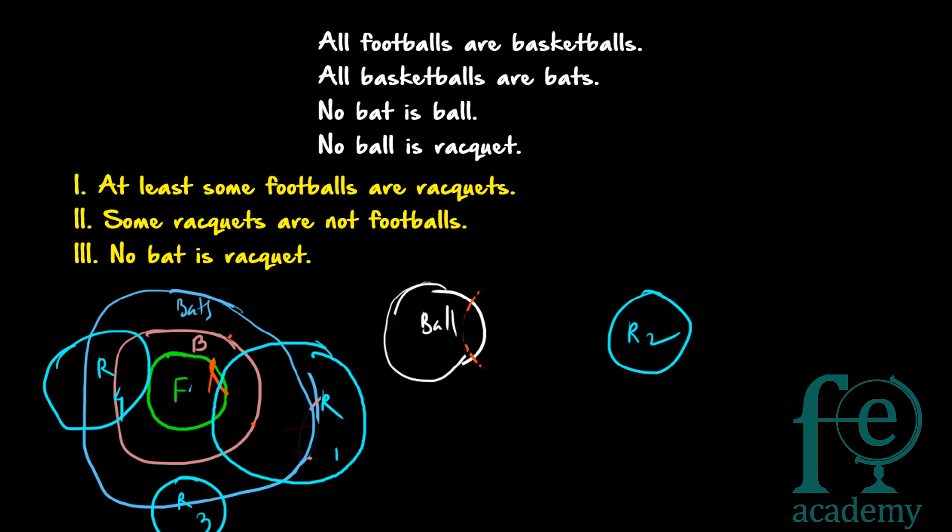First conclusion: at least some footballs are racket. We cannot tell, because there is one possibility that racket falls totally outside all three circles — bats, basketballs, and footballs. Since this possibility does not lead to conclusion 1, we can say conclusion 1 does not follow. All possibilities must lead to the conclusion for it to be true, but here one possibility does not, so conclusion 1 is false.